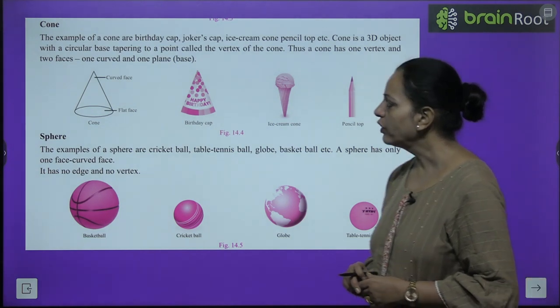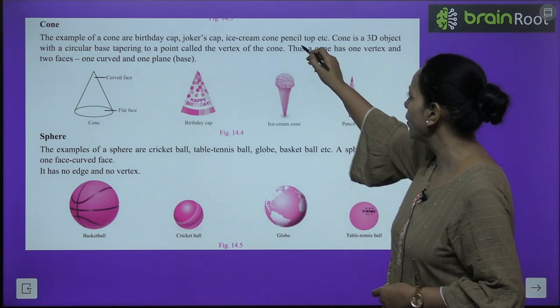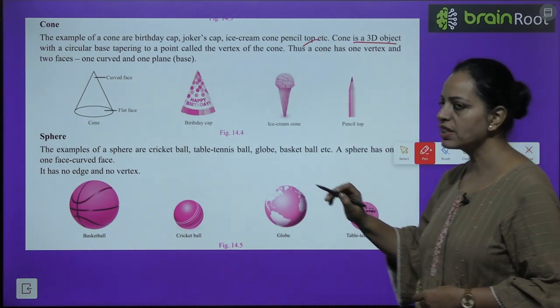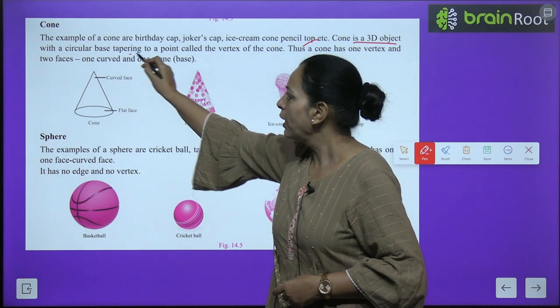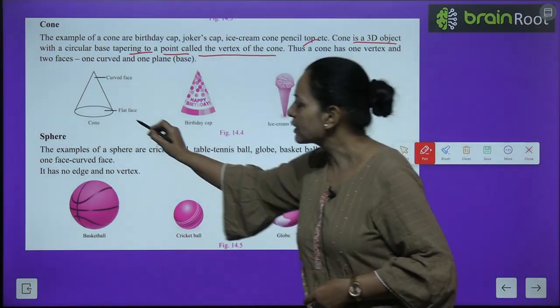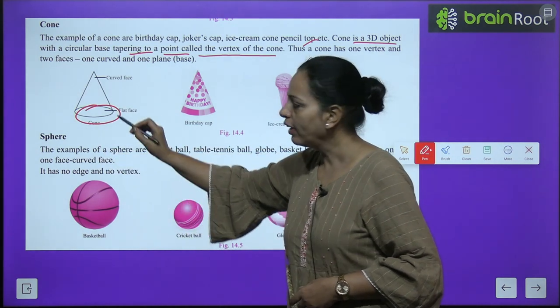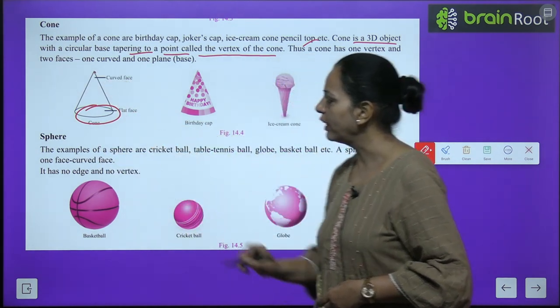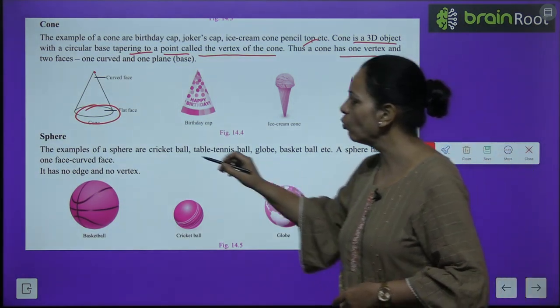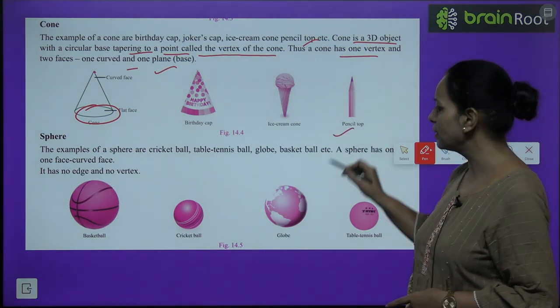Cone: The examples of a cone are birthday cap, joker cap, ice cream cone, pencil top, etc. A cone is a 3D object with a circular base tapering to a point called the vertex of the cone. It has a circular flat face, one curved face, and this is the vertex. So a cone has 1 vertex, 2 faces - 1 curved and 1 plain.